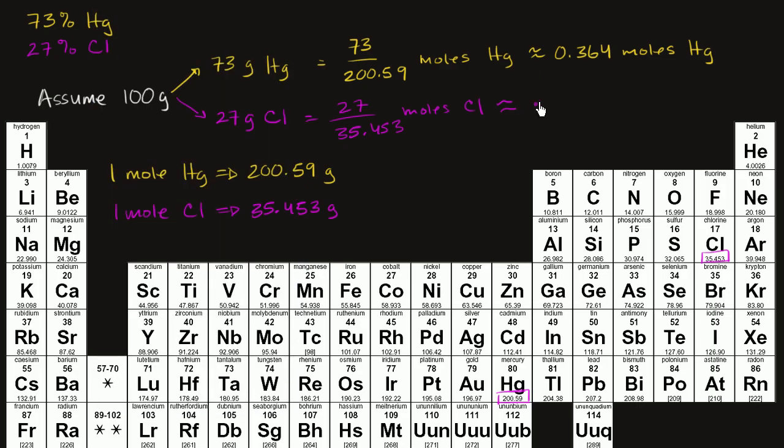So 0.762 moles of chlorine. So what's going to be the ratio of mercury to chlorine? Or I guess we could say since chlorine, there's more of that, chlorine to mercury.